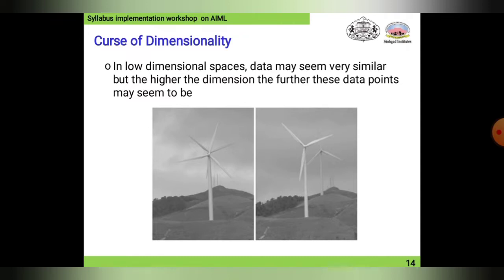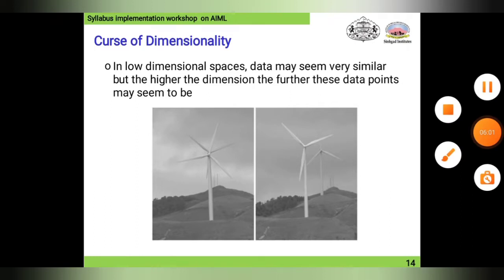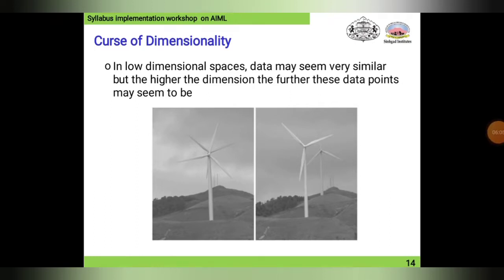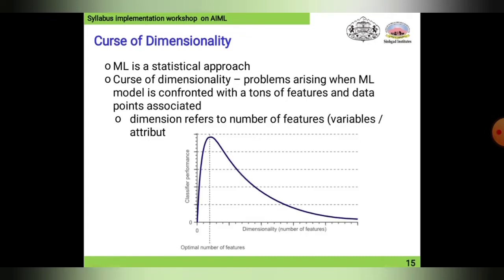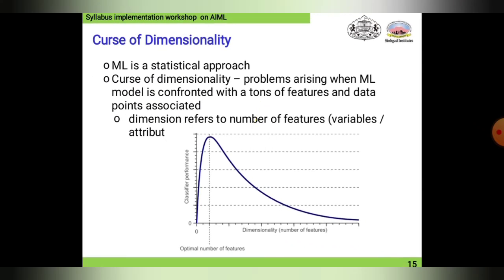In low-dimensional space, data may seem very similar, but in higher dimensions, data points may appear very different. The curse of dimensionality is a statistical phenomenon: problems arise when a machine learning model is confronted with a large number of features and associated dimensions. A graph of number of features versus classifier performance illustrates how performance changes with dimensionality.